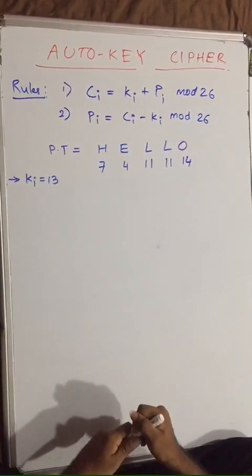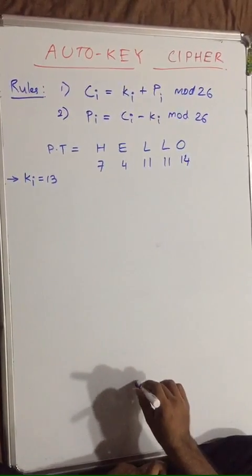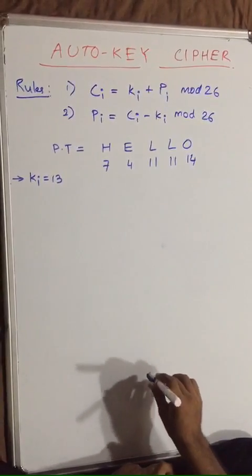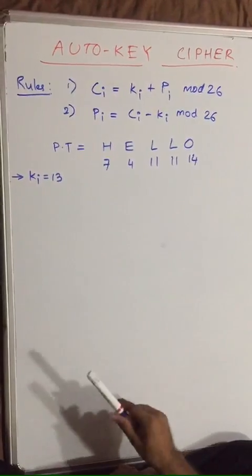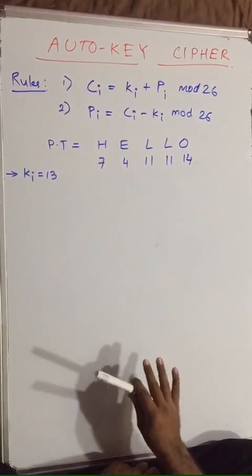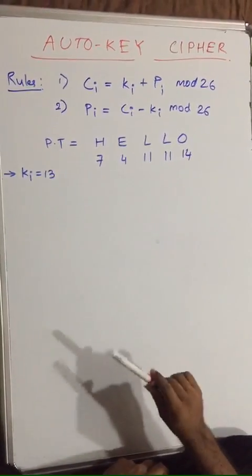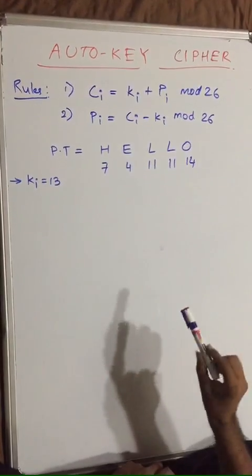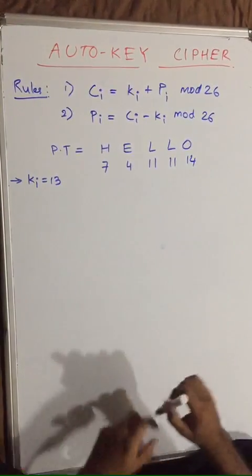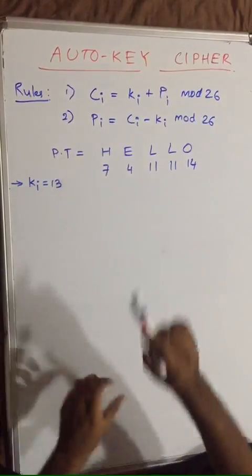Hello friends, welcome. From this lecture we are going to solve methods related to polyalphabetic substitution. In previous lectures we solved cipher attacks related to monoalphabetic. Now from this onwards we are going to start polyalphabetic. Auto-key cipher is the first cipher in polyalphabetic.